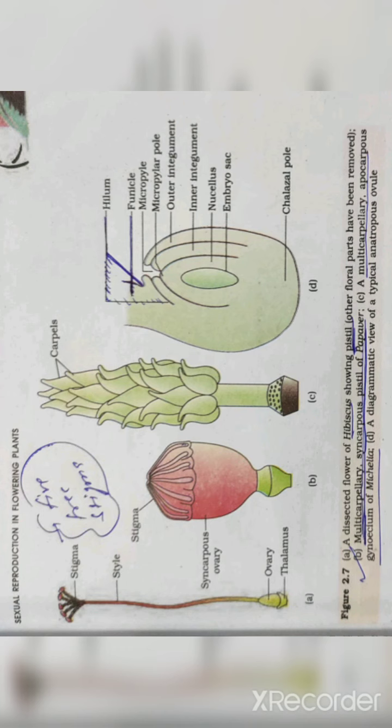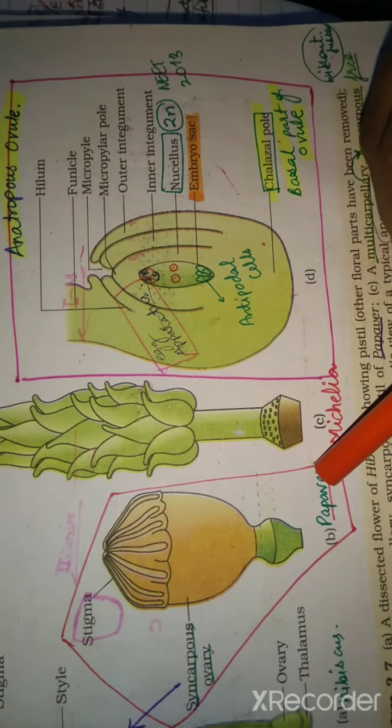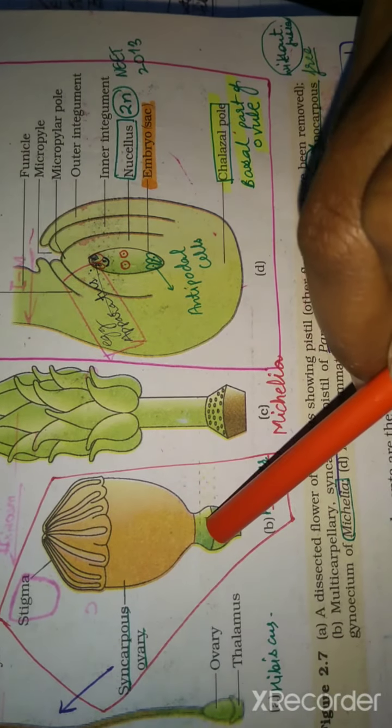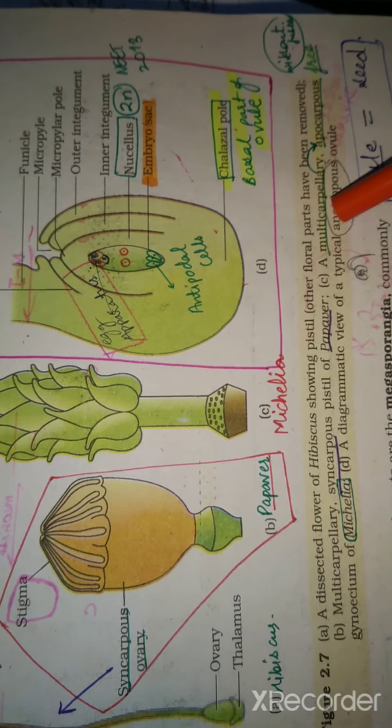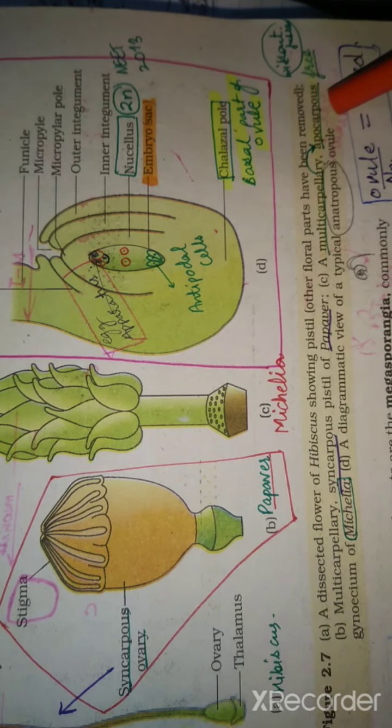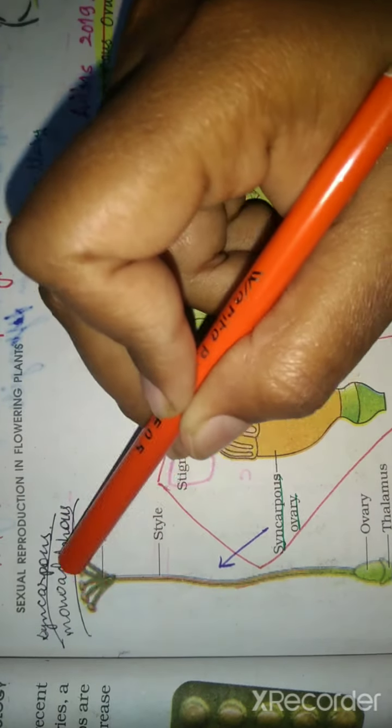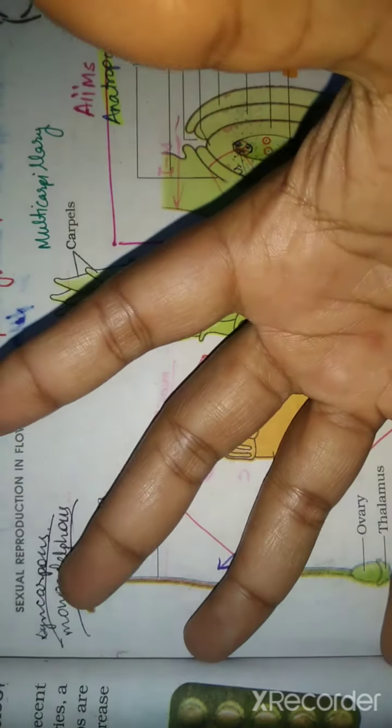Let's take a look at the diagram. This is from 12th NCERT. This is the Michelia diagram showing apocarpus condition. You can see the free carpels from the top - there will be 5 or 6 separate parts.